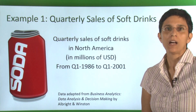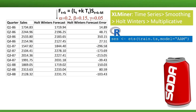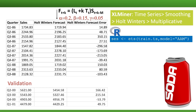Let's return to our example of quarterly sales of soft drinks. We apply to the soft drinks sales series Holt-Winters exponential smoothing with an additive trend and multiplicative seasonality. The software requires also specifying values for the three smoothing constants and the number of seasons — here we set the number of seasons to four. We obtain forecasts and forecast errors for the training period and for the validation period, which is the last four quarters in the series. We see that the forecasts are different for these four quarters, taking into account both the trend and the seasonality.